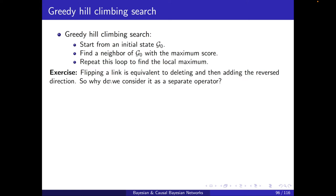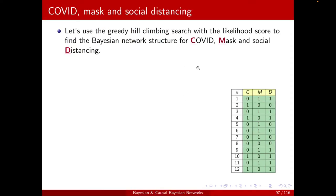So you may ask, okay, flipping a link is equivalent to deleting and then adding the reverse direction. So why do we consider it as a separate operator? I will leave it as an exercise here. Just note that the score may actually decrease upon the deletion. You may have noticed that the greedy hill climbing is quite similar to the continuous gradient ascent. It's basically a discrete version of it.